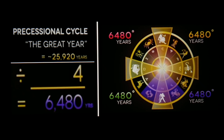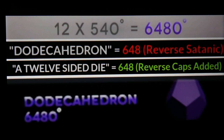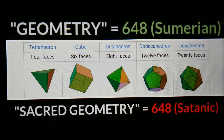One thing that inspired me while watching the Randall Carlson presentation was that he talked about the precessional cycle — the great year — and if you divide that into fourths, four seasons, each season is made up of 6,480 degrees or 6,480 years. Drop the zero and that's the 648.